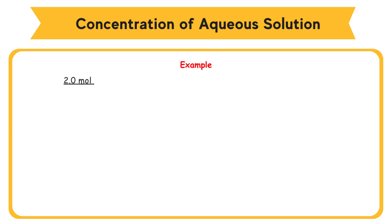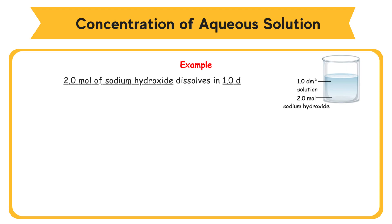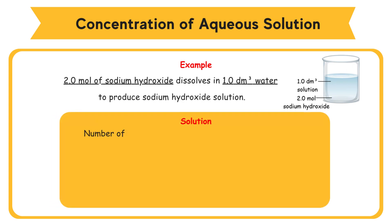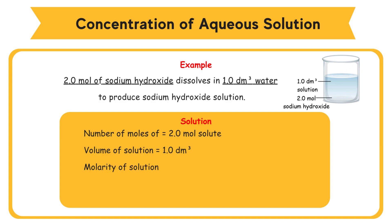Example: 2.0 moles of sodium hydroxide dissolves in 1.0 dm³ water to produce sodium hydroxide solution. Number of moles of sodium hydroxide equals 2.0 mol. Volume of solution equals 1.0 dm³. Molarity of solution equals 2.0 mol over 1.0 dm³, equals 2.0 mol/dm³.